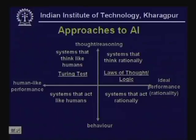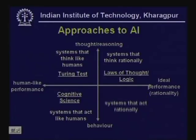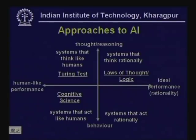Thirdly, there are systems that act like humans — cognitive scientists look at the properties of such systems. Finally, we have systems that act rationally, or in the best possible manner, and for this we have the approach of constructing a rational agent.